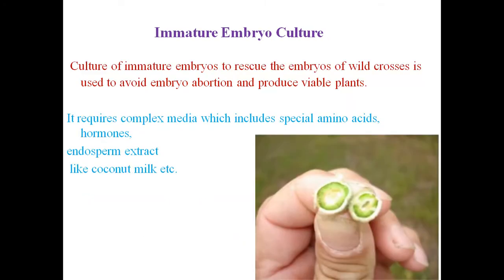Seed dormancy in many species is due to chemical inhibitors or mechanical resistance present in the seed coat covering the embryo, rather than dormancy of the embryonic tissues. Immature embryo culture involves culturing immature embryos to rescue them from wide crosses, to avoid embryo abortion, and to produce viable plants. Wide hybridization — crossing individuals from two different species of the same genus or different genera — often leads to failure due to survival barriers at pre- and post-fertilization levels. It requires complex media including special amino acids, hormones, and endosperm extract like coconut milk.